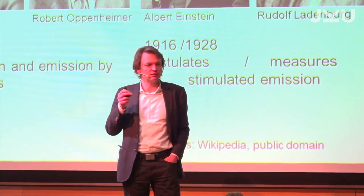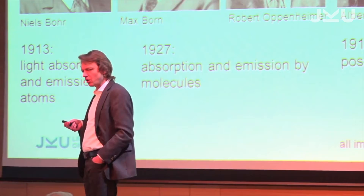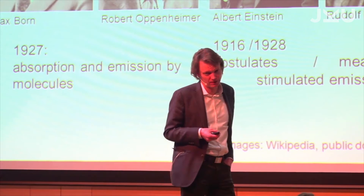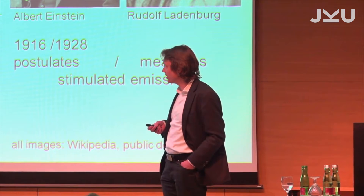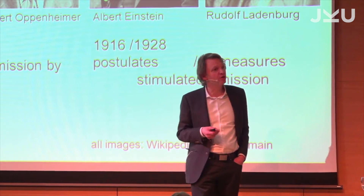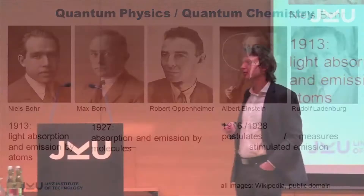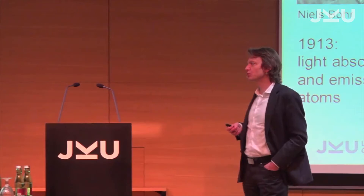That is surprising, because in the 1910s and 1920s a lot of new physics came up — quantum physics or quantum chemistry. Niels Bohr in 1913, a chemist by training, calculated the hydrogen atom quantum mechanically and published light absorption and emission by atoms. In 1927, Born and Oppenheimer extended his theory to molecules and published how organic molecules absorb and emit light. And in 1916, Einstein postulated stimulated emission, which was experimentally verified by Rudolf Ladenburg in 1928.